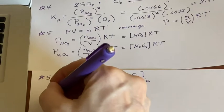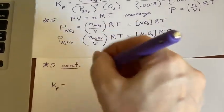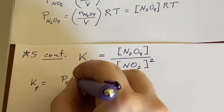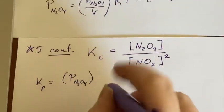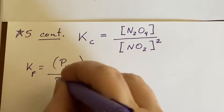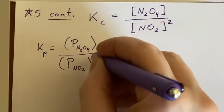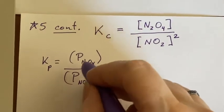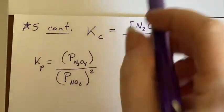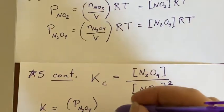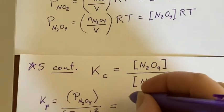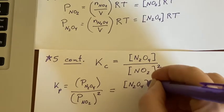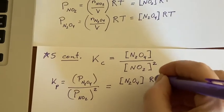K sub P would be similar, but it would be the pressure of the dinitrogen tetroxide over the pressure of the nitrogen dioxide squared. But now that we know how pressure is related to the different concentrations, we can go ahead and do a substitution. So here we would have the N2O4 concentration and also an RT.